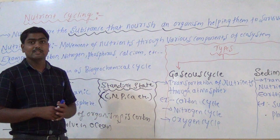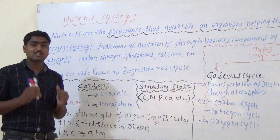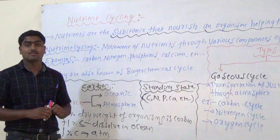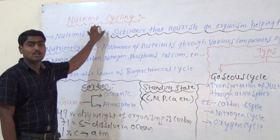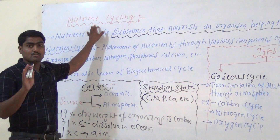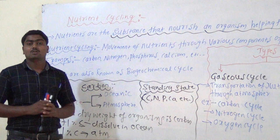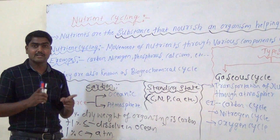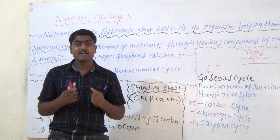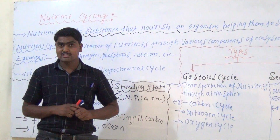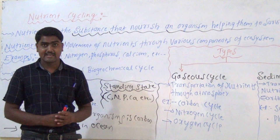Hello students. In this video I am going to discuss about the last aspect of ecosystem, that is called Nutrient Cycling. I have already explained about three aspects of ecosystem: productivity, decomposition, energy flow, and the fourth aspect, which is called Nutrient Cycling.